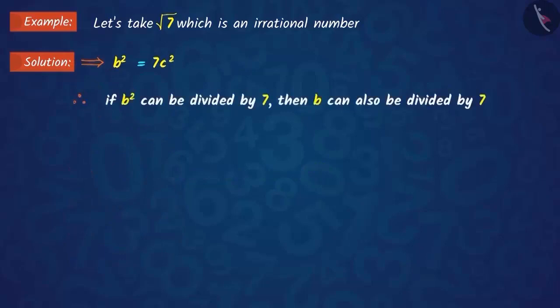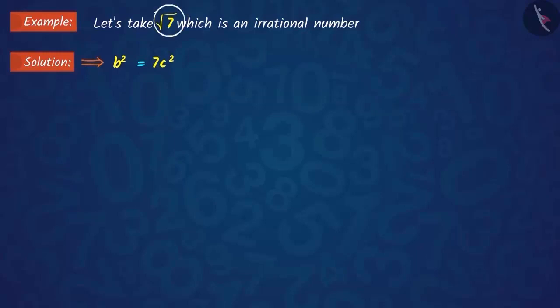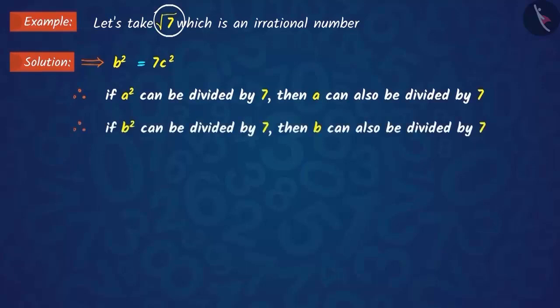This shows that 7 divides b². Then, 7 will also divide b. According to the given irrational number square root of 7, we get two results here.